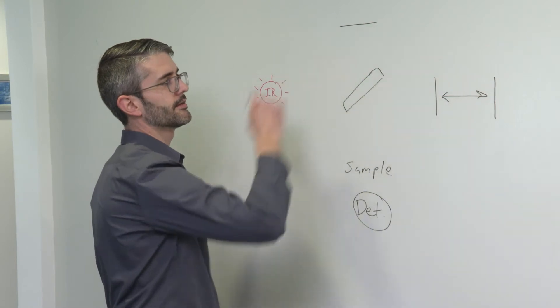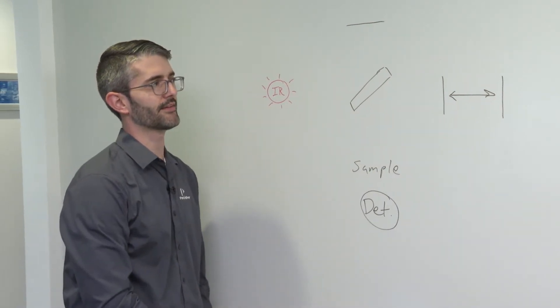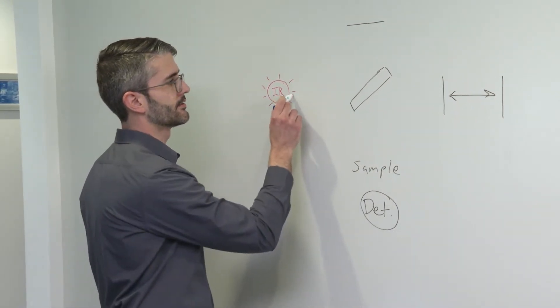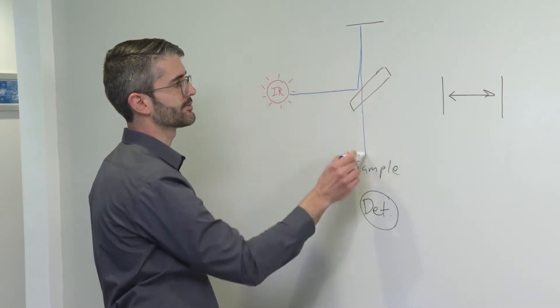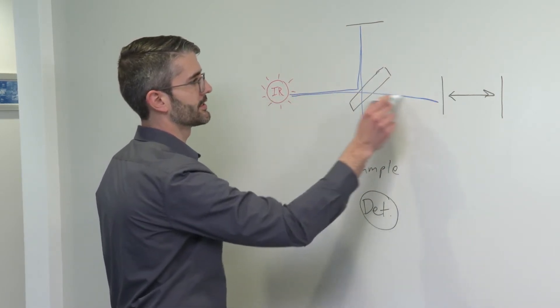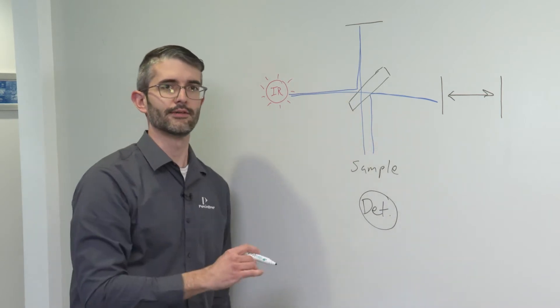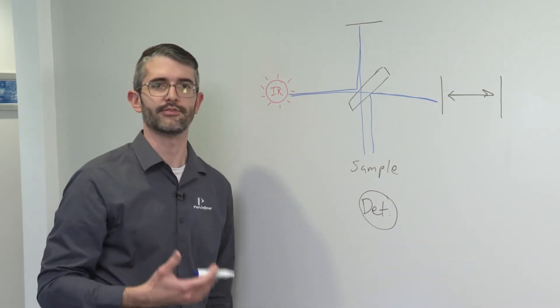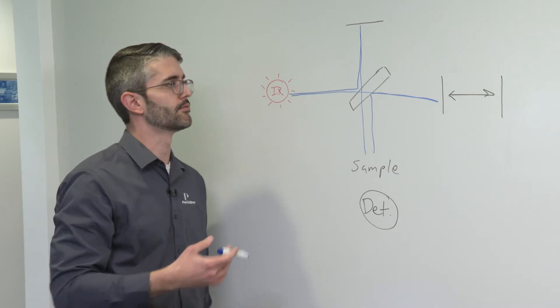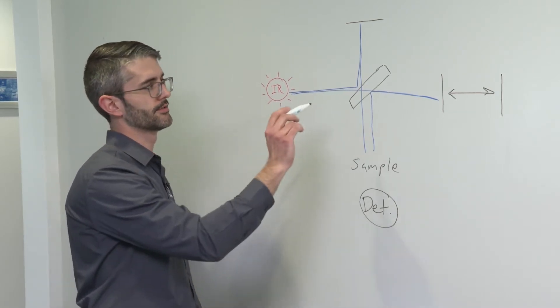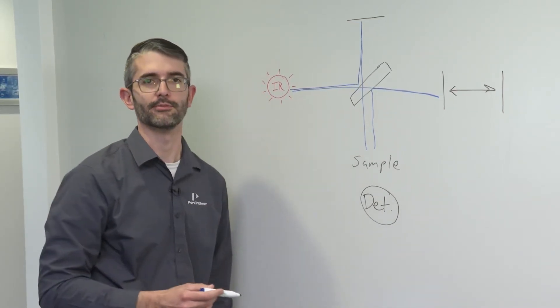This assembly here changes the optical path difference of the infrared light. So infrared light can take this path, infrared light can take this path. It's the interference of this light which produces what is known as the interferogram, which is the raw signal measured as part of the infrared measurement of a sample.